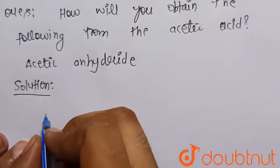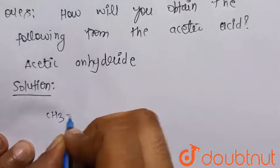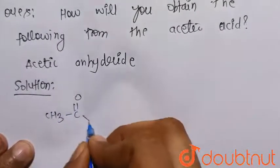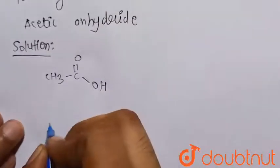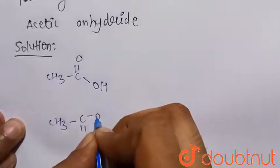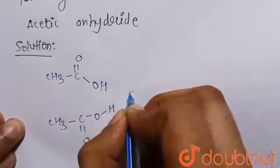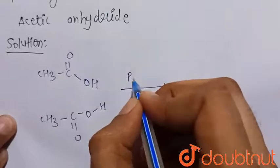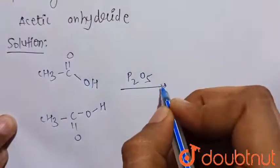Consider the two moles of acetic acid: CH3-C double bond O-OH and another CH3-C double bond O-OH. When it is reacted with P2O5, which is the dehydrating agent,